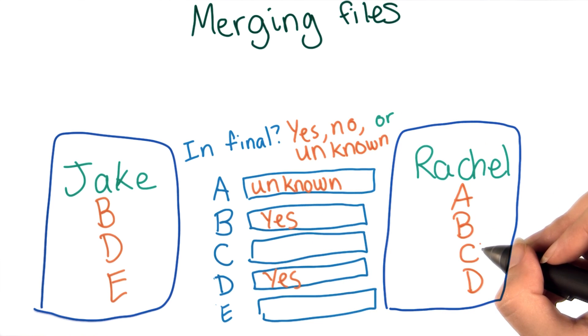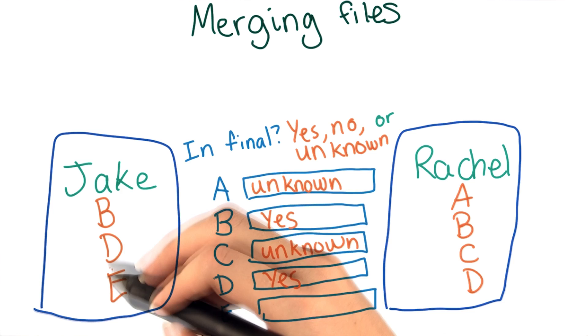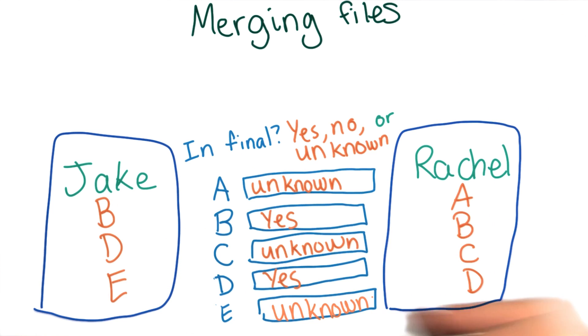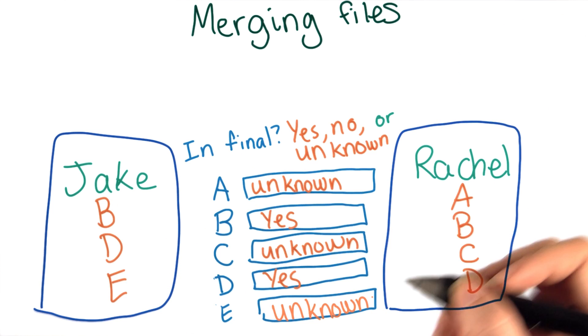We can see that the same reasoning applies to C, and the opposite is true for E. It's in Jake's file but not Rachel's, meaning that either he added it or Rachel deleted it. Since we can't tell these apart, we don't know whether we should include it or not.